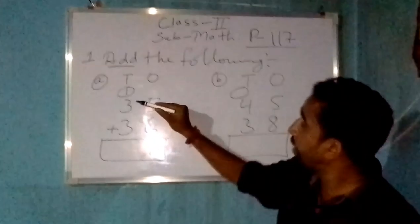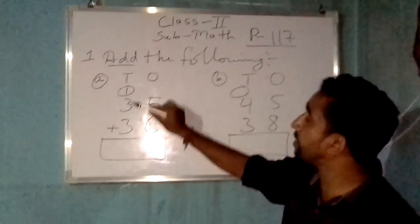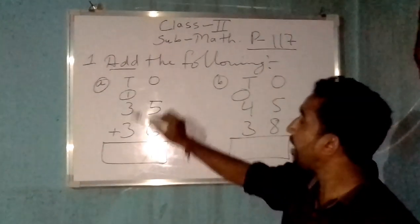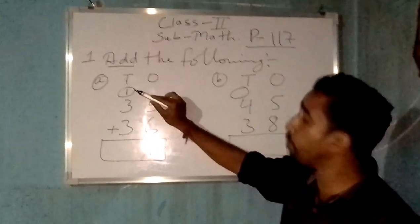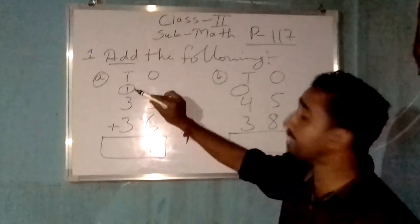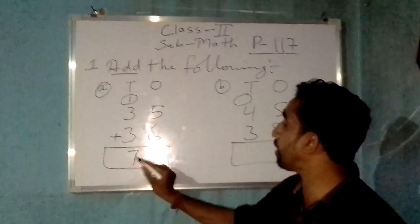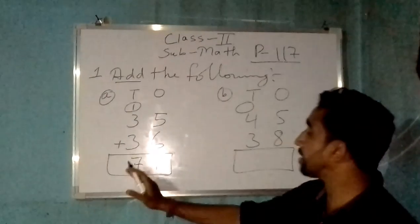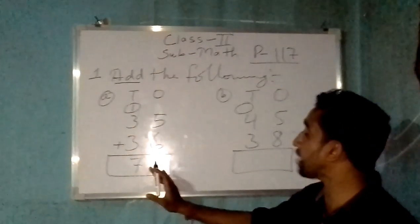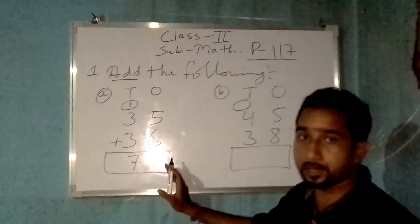Now when I will plus this 3 along with this 3, I will also plus this digit which I have carried. 3 plus 3 plus 1 is equal to 7. So 10 plus 1 is equal to 71. And I hope you have understood.